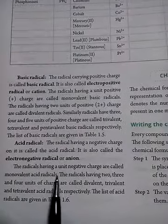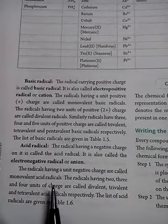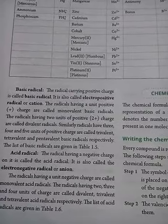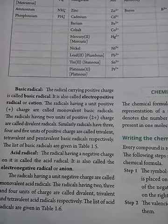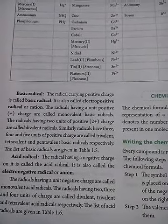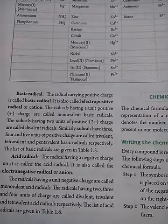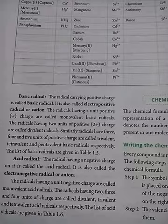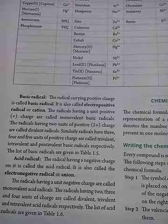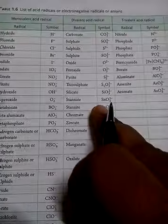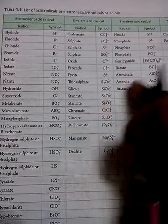Radicals having a single negative charge are called monovalent radicals. If they are having 2 negative or positive charges, they are divalent. If they are having 3 charges, they are trivalent, and so on. Here in table 1.6 some examples are given — you can see them there.